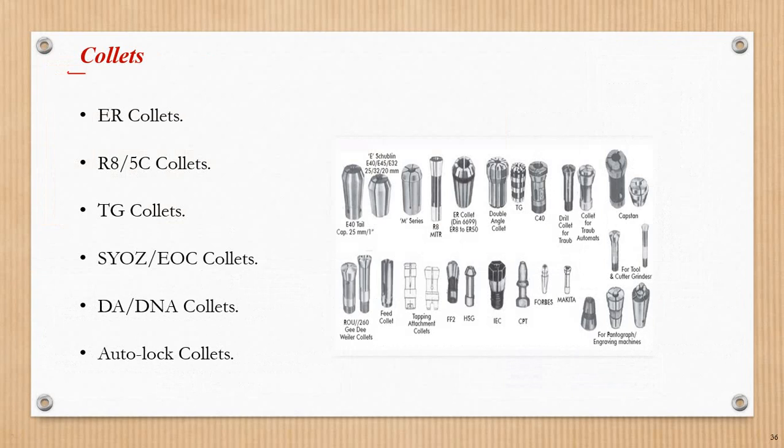Next is collets. There are: ER collets, R8, 5C collets, TG collets, ER/OZ collets, DIN collets, and autologging collets — different types for different machines. These are used for tapping, feed collets, ER collets, and for drilling and engraving operations.